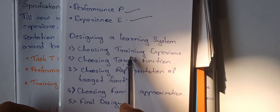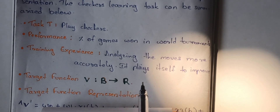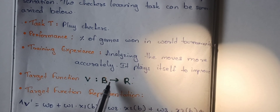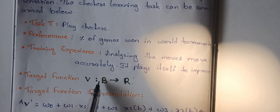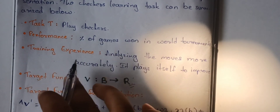Step 2 is choosing the target function. We use an indirect function V: B to R, where B is the set of legal board states and R is the real score. Board states have positions like winning score, losing score — one real score is allotted. This is the target function.